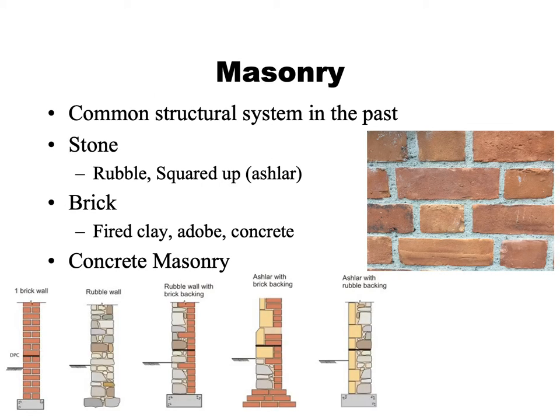The most common structural system in the past for significant large institutional or commercial buildings was masonry — basically a mineral-based material, sometimes natural stone, sometimes made from natural materials like clay that are either dried into things like adobe or fired to make brick. More recently, it became common to use concrete masonry, where units are made out of cement-bonded sands.